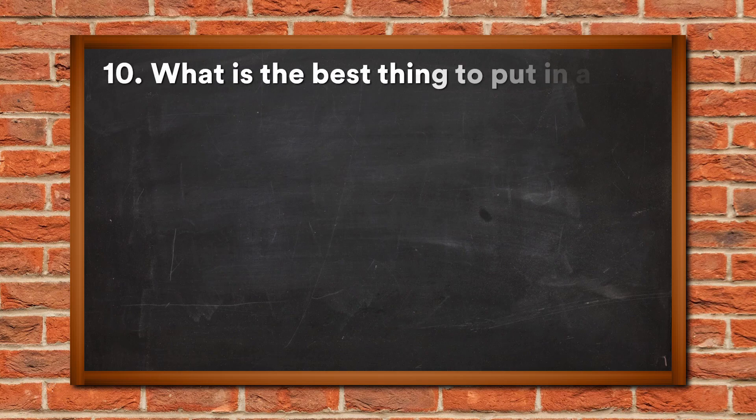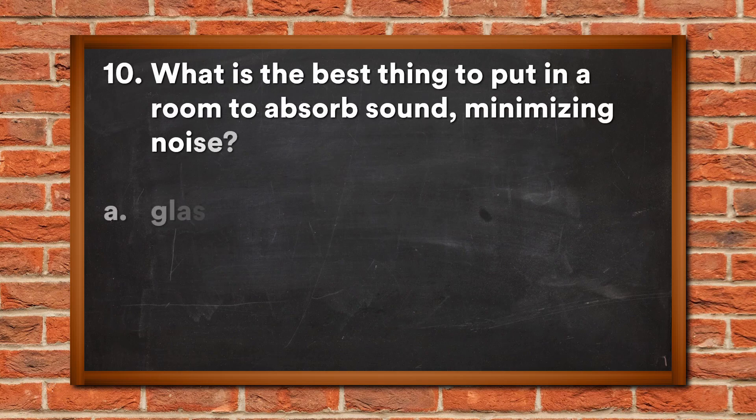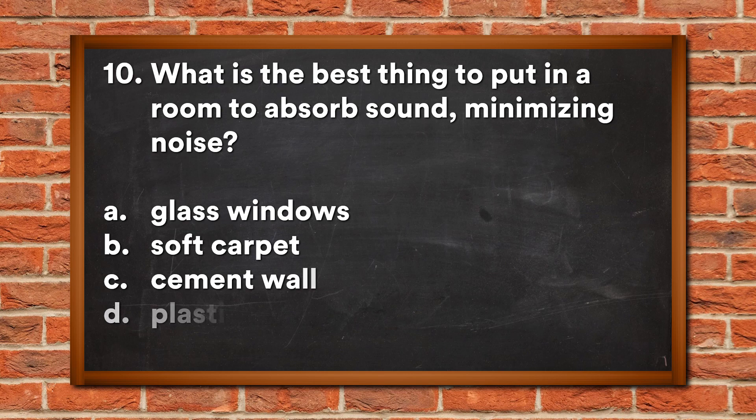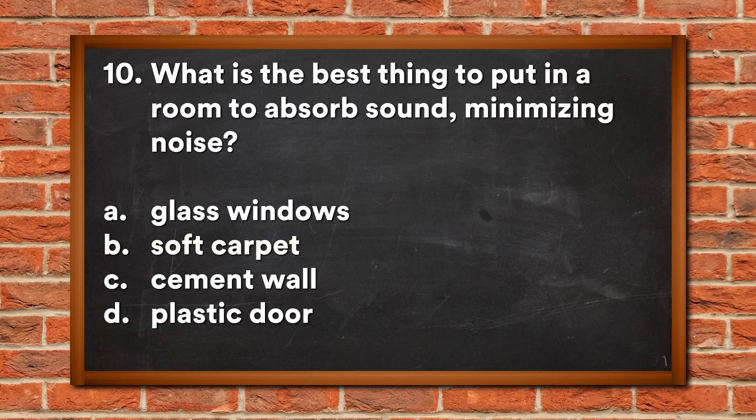Question 10: What should you put in a room to absorb sound, minimizing noise? A. Glass windows, B. Soft carpet, C. Cement wall, D. Plastic door. The answer is B, soft carpet.